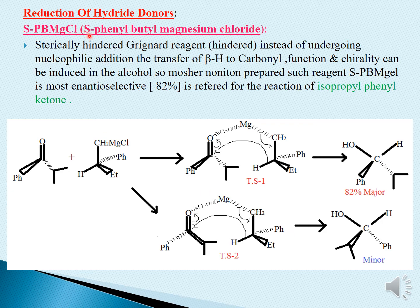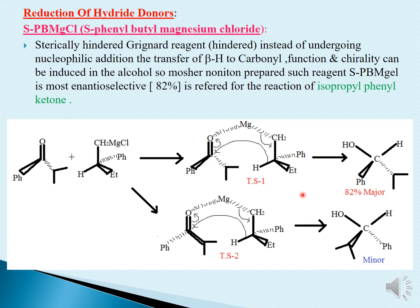S refers to the S configuration. PhBuMgCl stands for phenyl butyl butyl magnesium chloride. Here, we are using a sterically hindered Grignard reagent. Instead of undergoing nucleophilic addition, this Grignard reagent is used for the transfer of the beta hydrogen to the carbonyl compound, and chirality can be induced to give alcohol as the product. We are taking isopropyl phenyl ketone and treating it with this phenyl-substituted Grignard reagent.